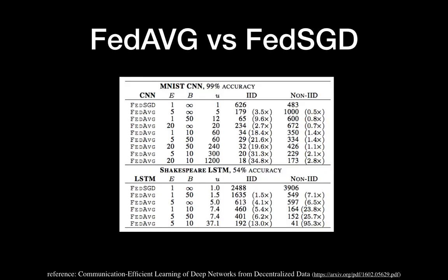Here are the results from the research paper. For MNIST CNN targeting 99% accuracy, you can see CNN, FedSGD, and FedAVG results. When E=1 and B=infinity, this is equivalent to Federated SGD. Otherwise, these are the Federated Averaging results. The IID value represents when each device has identical, uniformly distributed information — this is the ideal but not realistic situation.